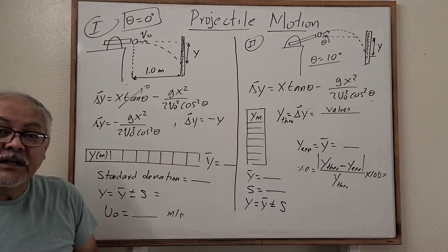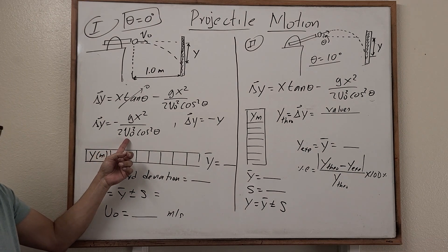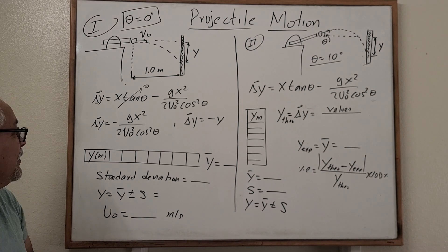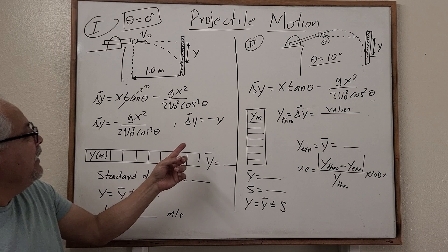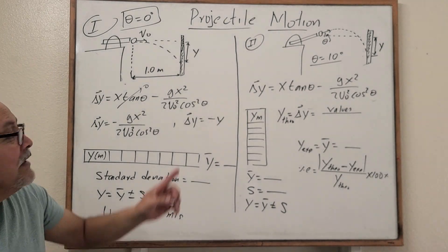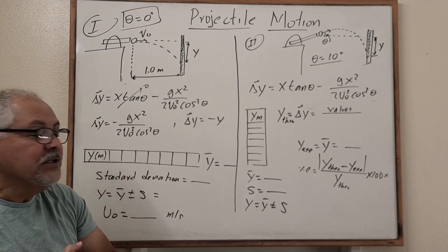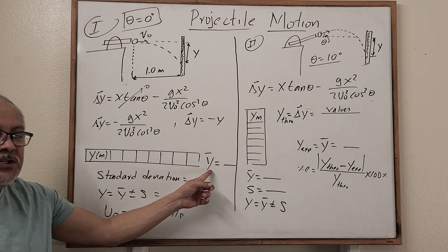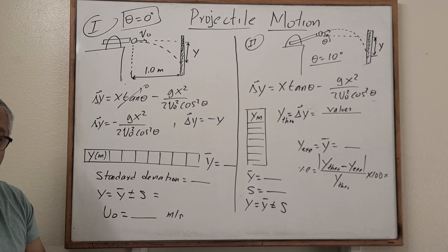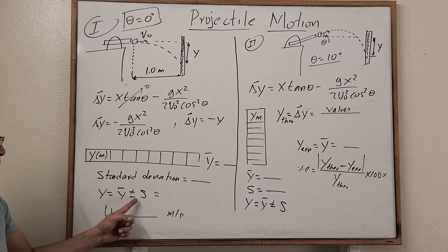Because delta y is a vector, it's going to be negative y. When we substitute the values, v-naught squared is going to be positive. To find y, we're looking for an average because the projectile impacts are at slightly different positions — they are very close but not exactly the same point. So let's find the average and the standard deviation, then represent this quantity y as the average plus or minus the standard deviation.